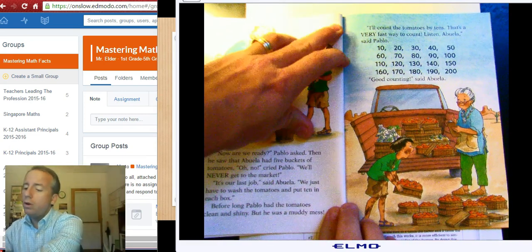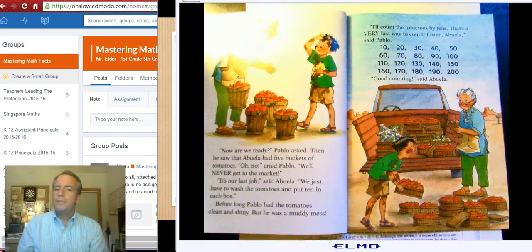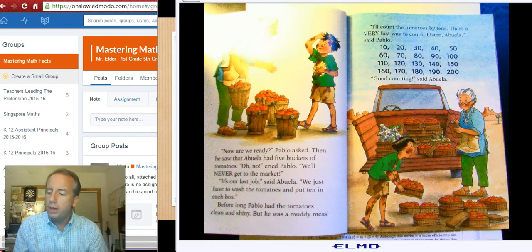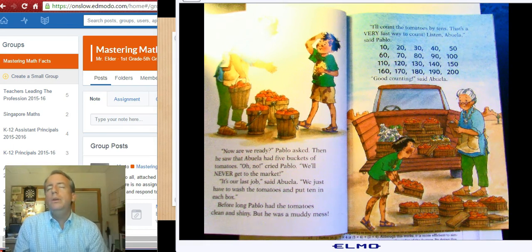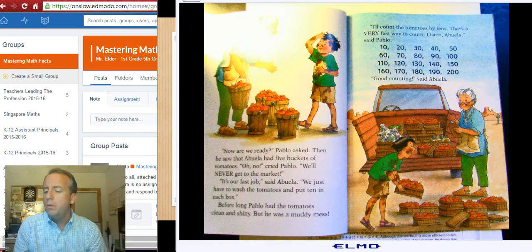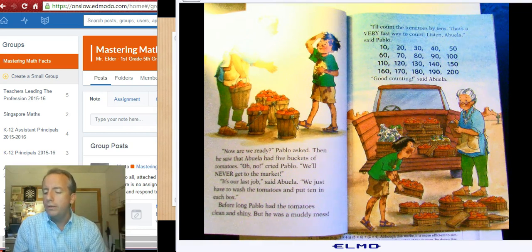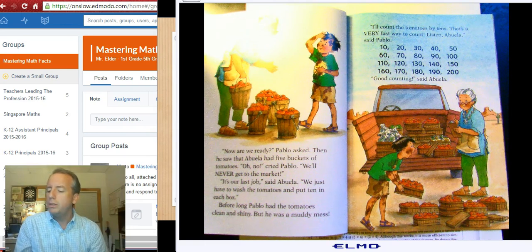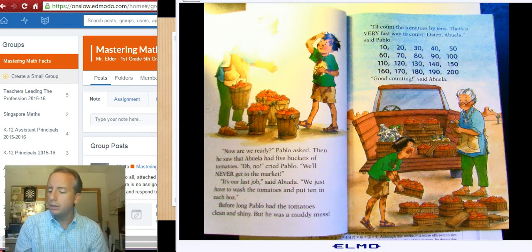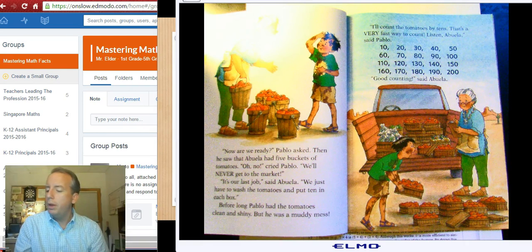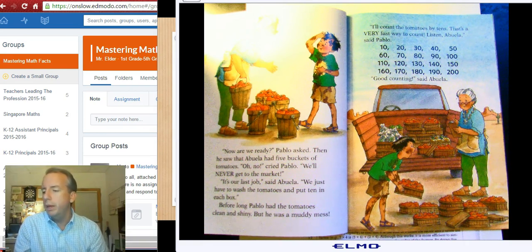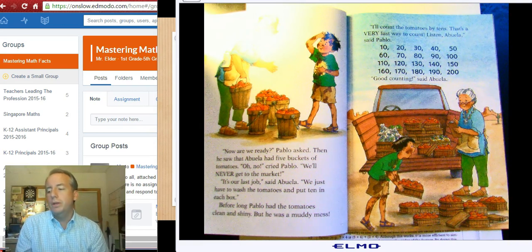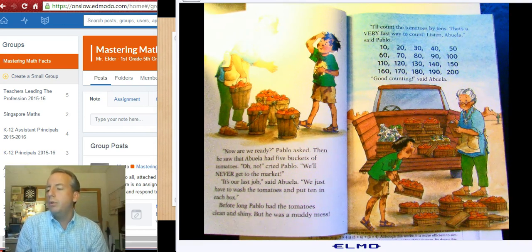Now are we ready, Pablo asked. And then he saw Abuela had five buckets of tomatoes. Oh no, cried Pablo. We'll never get to the market. It's our last job, said Abuela. We just have to wash the tomatoes and put ten in each box. Before long, Pablo had the tomatoes clean and shiny, but he was a muddy mess.